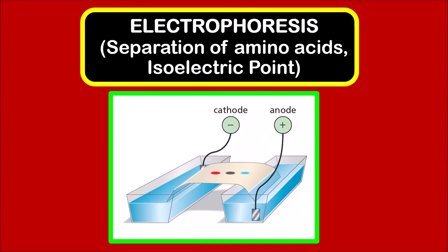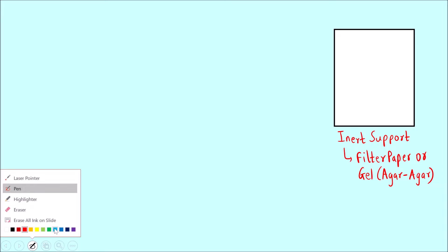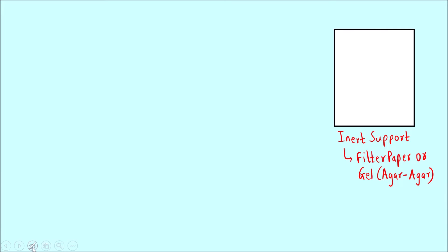This is a setup for electrophoresis. What we do in electrophoresis is take an inert support — either a filter paper or an agar agar gel. In this inert support, you pour some amino acid solution.